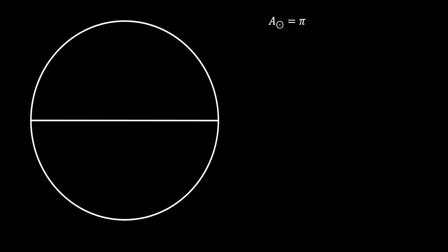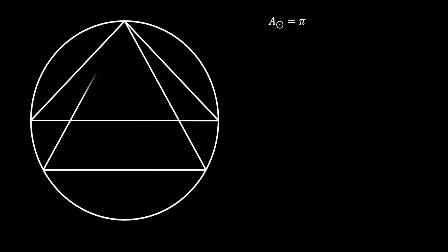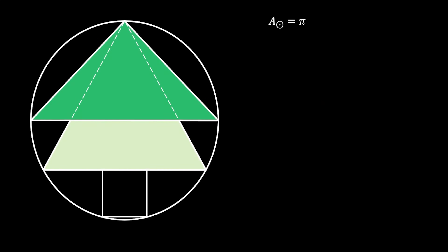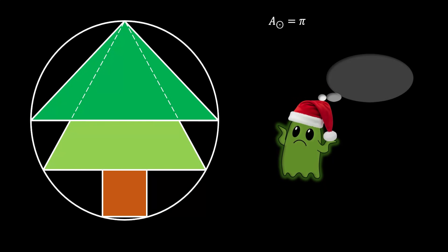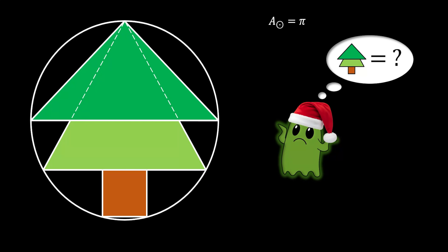We're going to start this problem with a circle with the area of pi. Then we're going to use the diameter of this circle, and from this diameter we're going to construct an isosceles triangle to the apex of our circle, as you can see on the sketch. Next, we're going to use the same apex to construct an equilateral triangle. And finally, on the bottom section of our circle, we're going to inscribe a square, using the horizontal side of our equilateral triangle as a boundary. Now if we put some colors into our sketch, you can see that we have a nice Christmas tree. And the question is: can we somehow calculate the area of this Christmas tree?